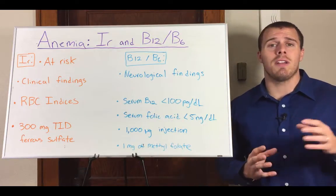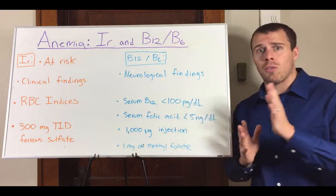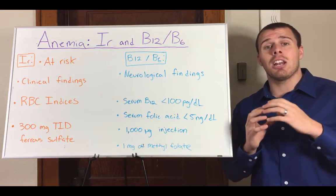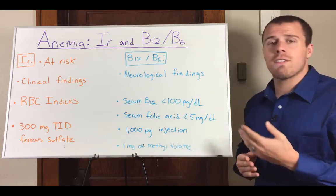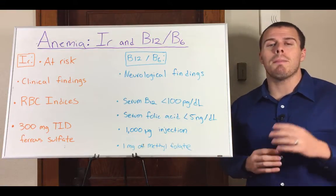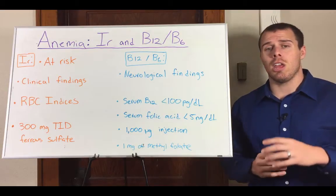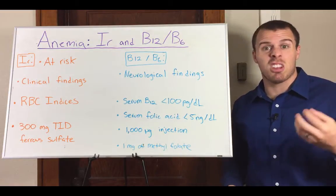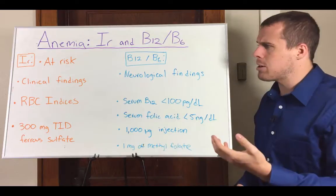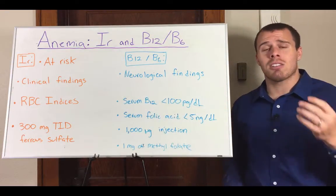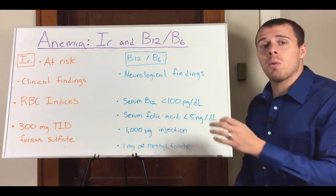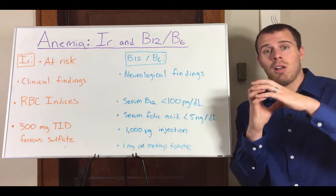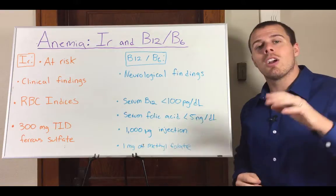Red blood cell indices are how we differentiate the various types of anemias — they look at the size and color of the red blood cell. With iron deficiency anemia, the indices are microcytic hypochromic. Microcytic means the red blood cell is too small. We measure this using a CBC, a complete blood cell count and differential, and we look at MCV, mean corpuscular volume. If MCV is below 80, we call it microcytic.